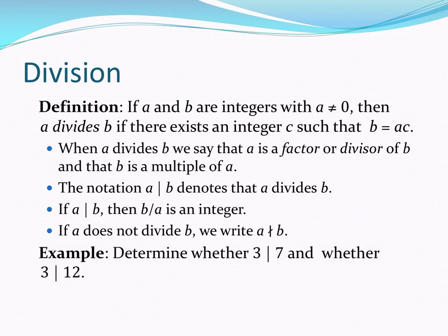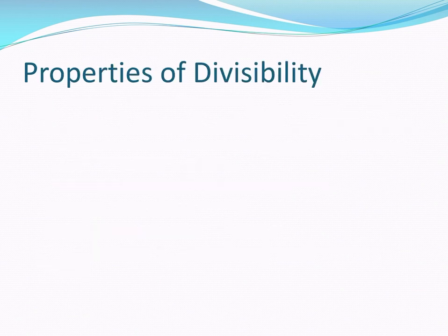So for the first example, we've got two propositions: 3 divides 7 and 3 divides 12, which is true and which is false? Well, 3 does not divide 7 because there's no integer which, when multiplied by 3, gives 7. So that's a false proposition. And 3 divides 12 because there is an integer, namely 4, which when multiplied by 3 gives 12.